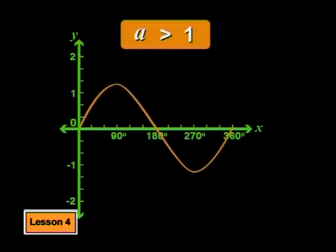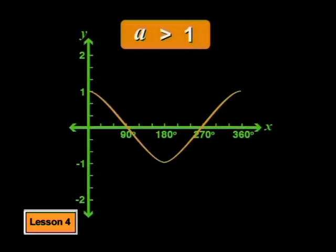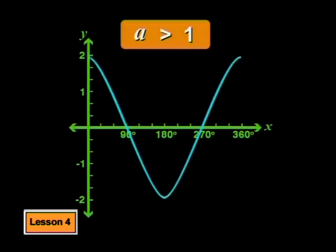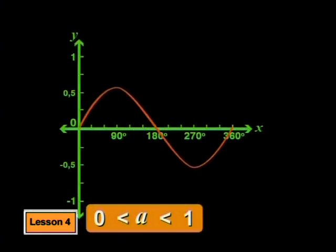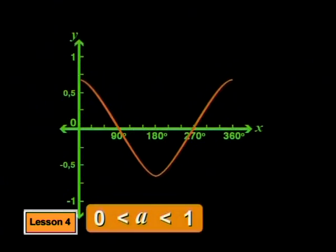So far we've tested two values for a. What you will find is that if we choose an a value greater than 1, both parent graphs stretch by a factor of a away from the axis. If we choose a positive a value less than 1, both parent graphs are pulled towards the x-axis by a factor of a. But what will happen if a is negative?